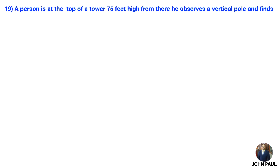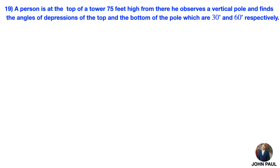Next problem. A person is at the top of a tower 75 feet high. From there, they observe a vertical pole and find the angle of depression of the top and the bottom of the pole to be 30 degrees and 60 degrees respectively. Find the height of the pole.